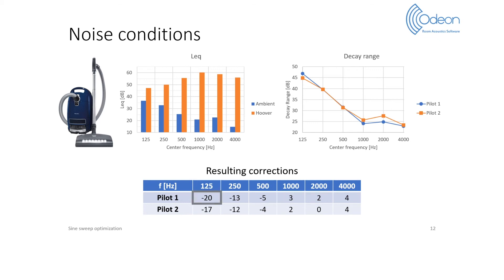It should be noted that for pilot 1, the correction of minus 20 dB at 125 Hz actually violates the minimum time constraints for sweeps of 8 seconds, therefore it is truncated to minus 17 dB in practice.